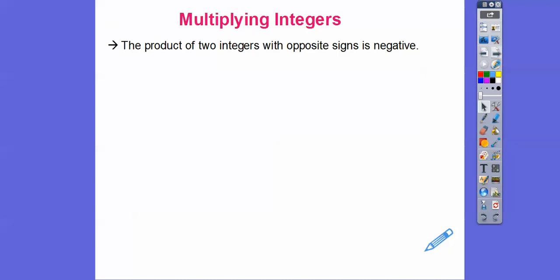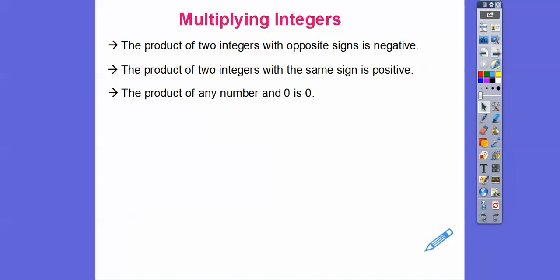So: multiplying integers — the product of two integers with opposite signs is negative. The product of two integers with the same sign is positive. The product of any number and zero is always zero. And the product of any number and one is always that number.